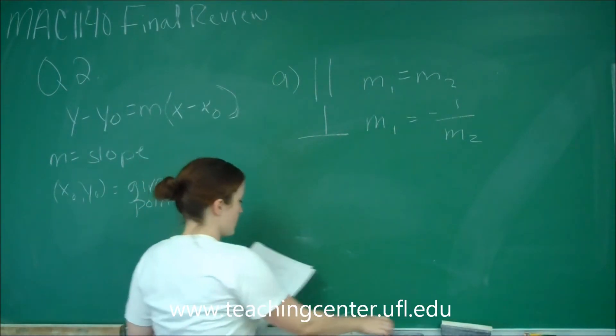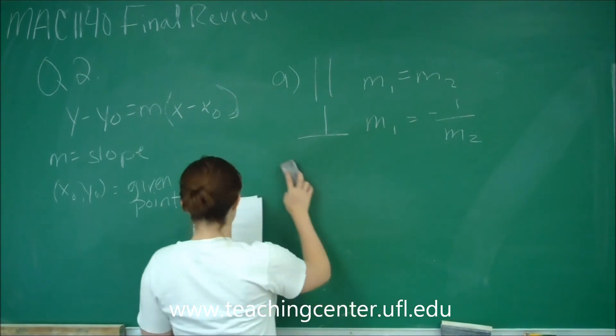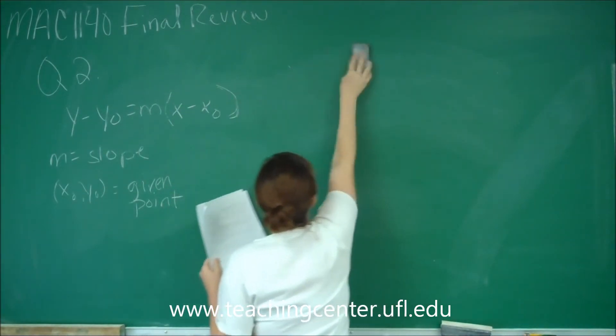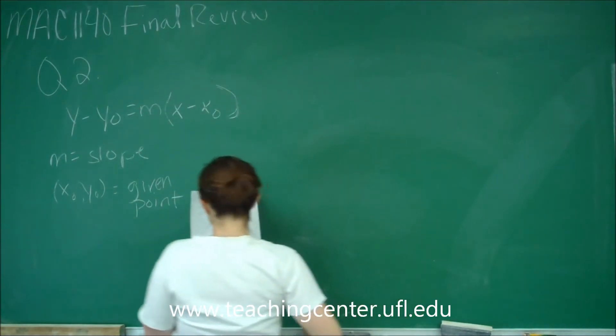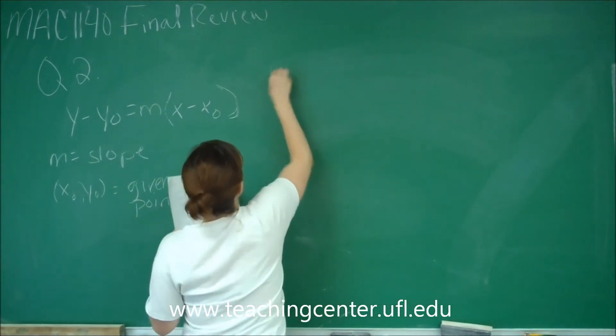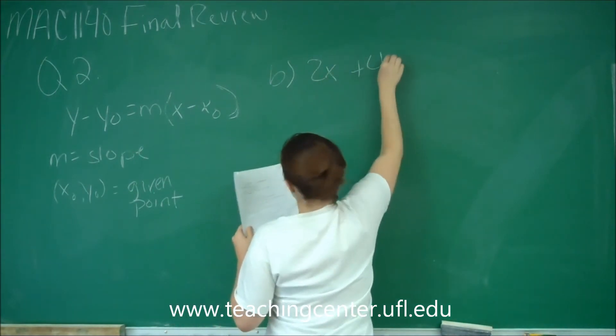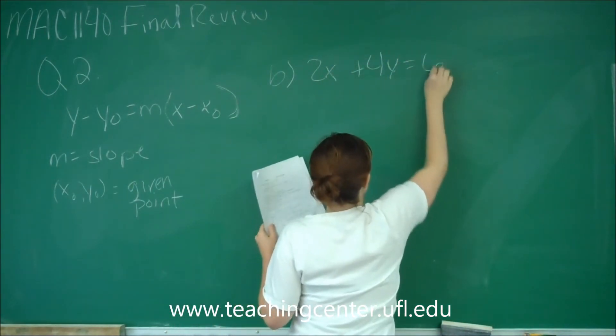Part b asks us to find the equation of a line that is parallel to another line. Parallel, again, we're looking for the same slope. The line is 2x plus 4y equals 6.